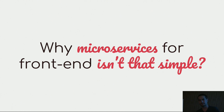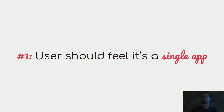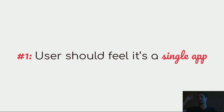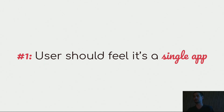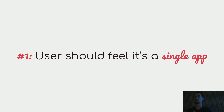First of all, on the front-end side, the user shouldn't notice there are dozens of modules behind the scenes. For the user, they need to think that one engineer, one designer, and one product manager built the whole thing. It doesn't make sense for them to see pages that look different, behave different, and communicate differently. It will break their mental model — they should use it as a single app. Behind the scenes it's broken into modules and micro-frontends, but when it reaches the user it will look and feel like one single application.